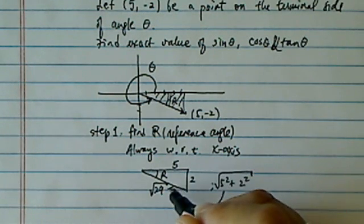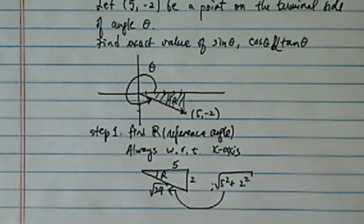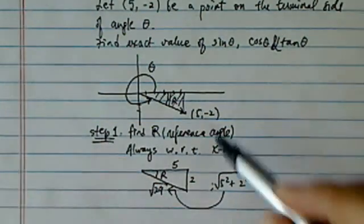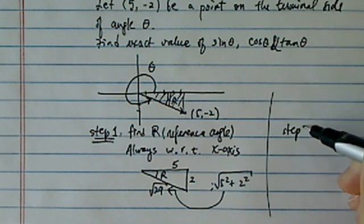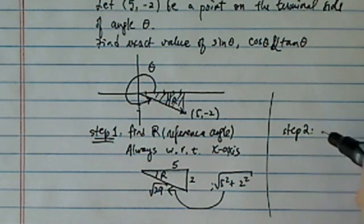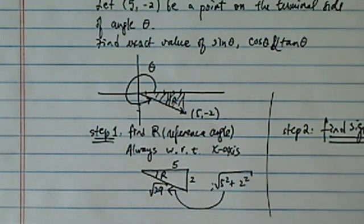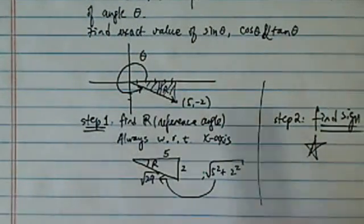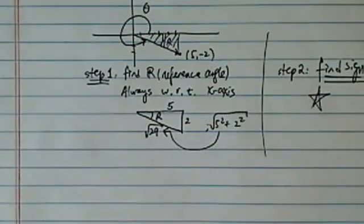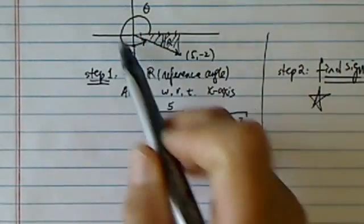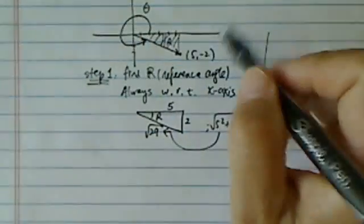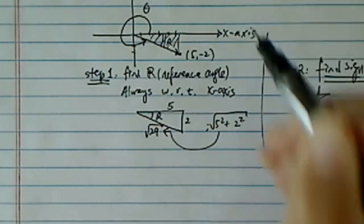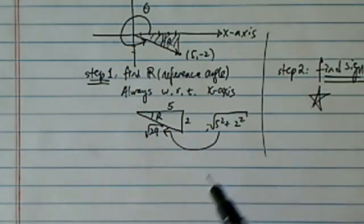So for step 1, you find out where the reference angle is. And then step 2 is you use this one to find sine. We'll go through more and talk about what this means. For now, let's just know it's a two-step process. So for our particular problem, theta is over here, reference angle with respect to x-axis is here in quadrant 4.